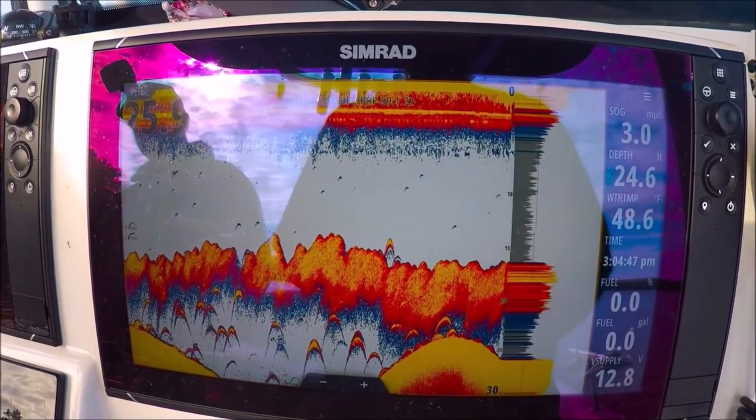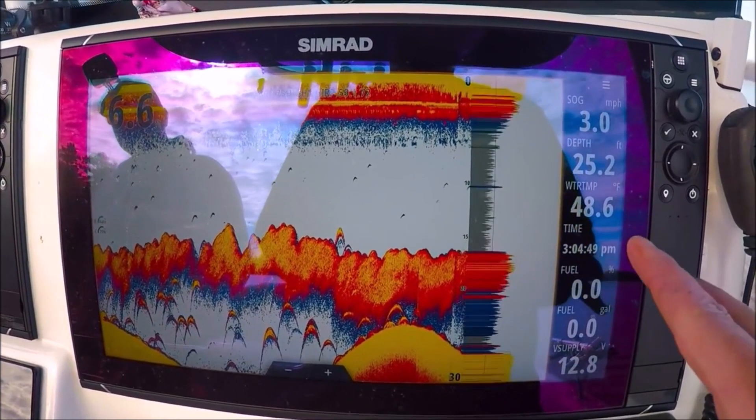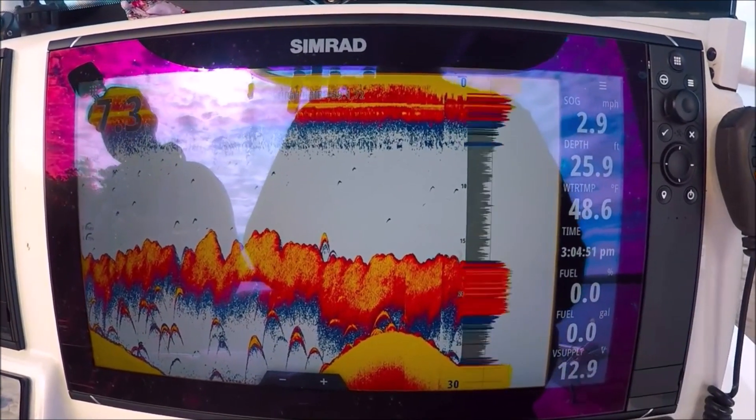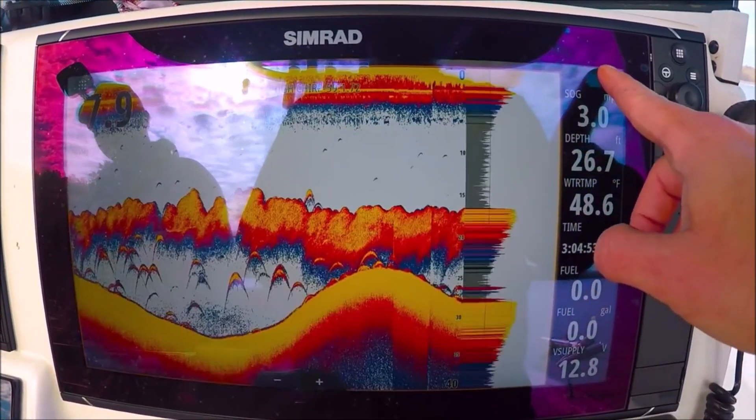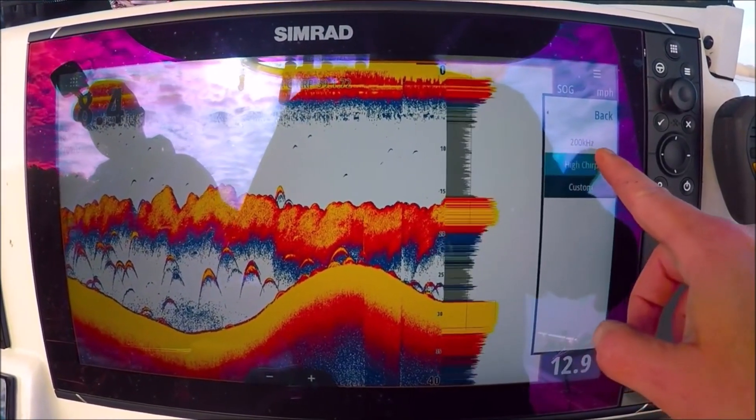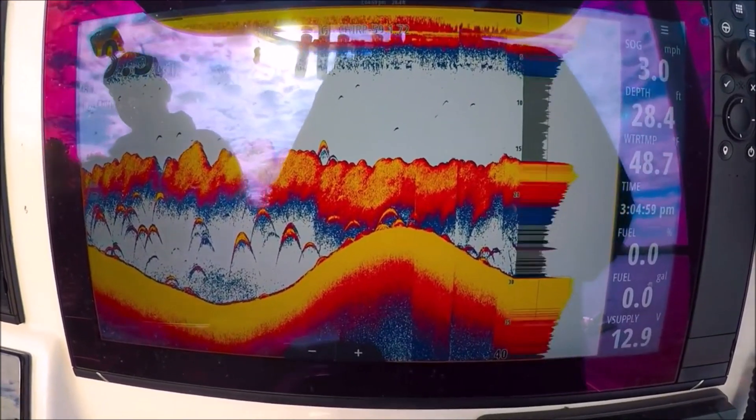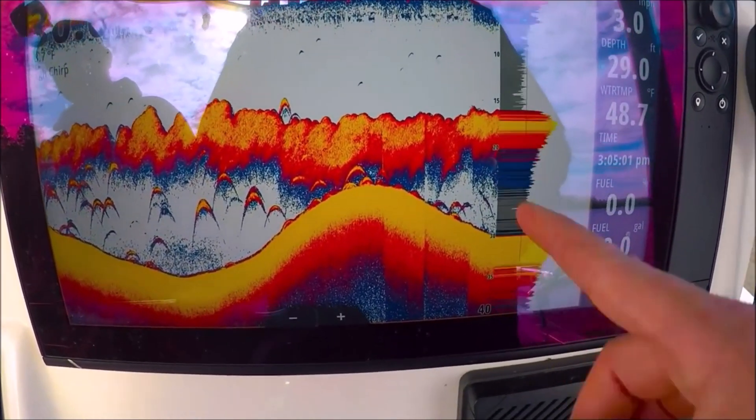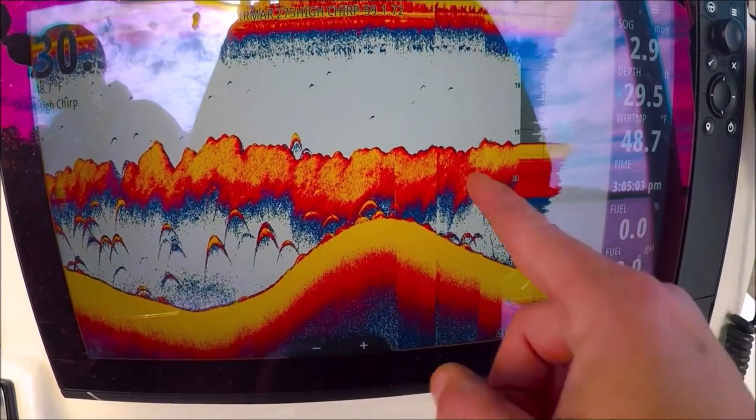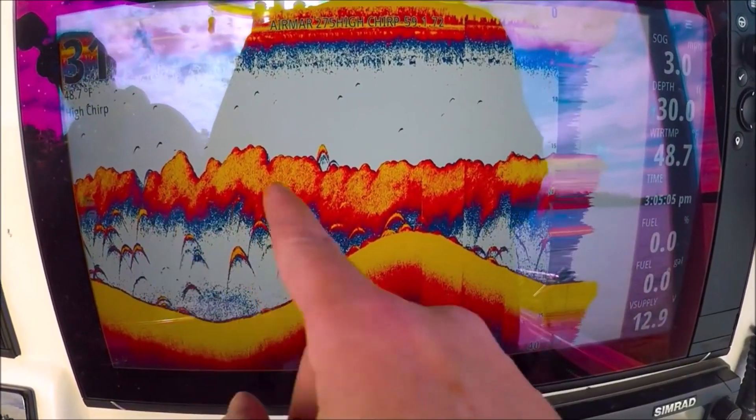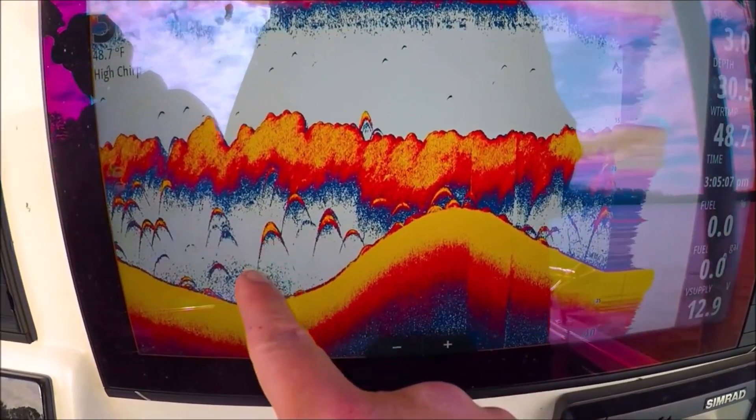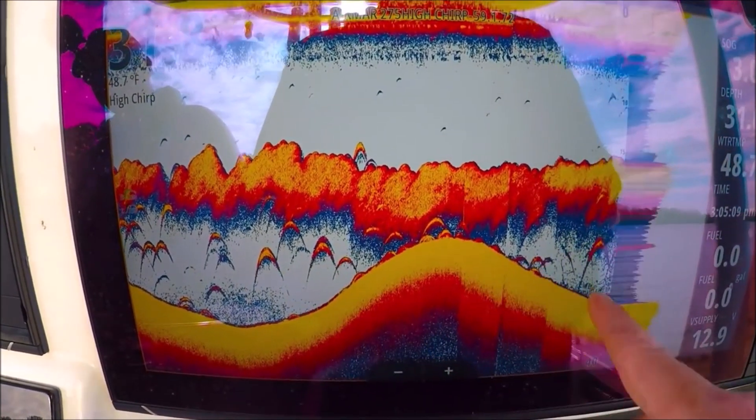That feature is only available with certain chirp transducers. Let's go back to high chirp. Alright, now what are we looking at on the screen here? Okay, this is thousands and thousands of threadfin shad. Underneath, these are striped bass. These are perch. These are catfish, anything down here eating these threadfins.